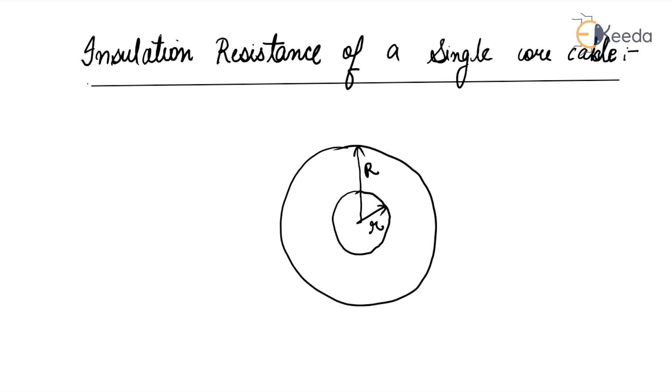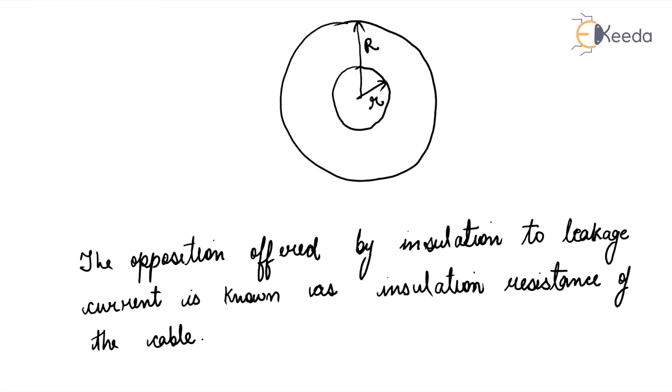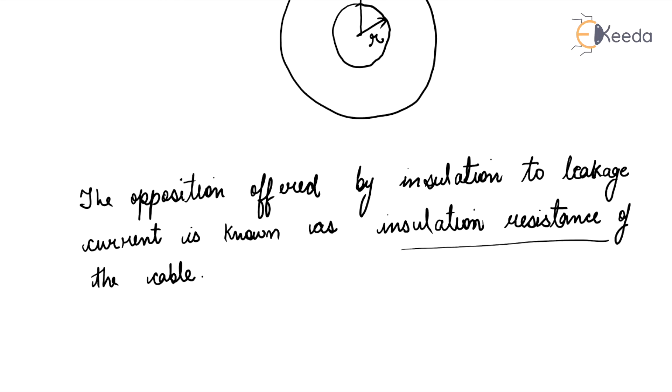The cable conductor is provided with a suitable thickness of insulating material in order to prevent leakage current. Whenever current passes in the conductor, leakage occurs from conductor to sheath. The opposition offered by insulation to leakage current is known as insulation resistance of the cable.